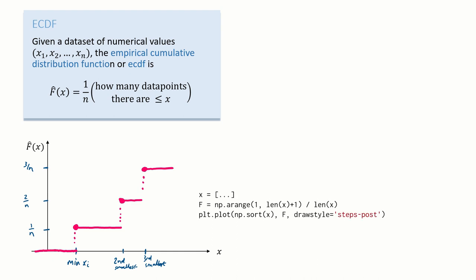It's almost embarrassingly simple to plot. Just sort the x values, pick evenly spaced values on the y-axis going from 1 on n up, and plot it. Matlab has an option saying plot it as steps.